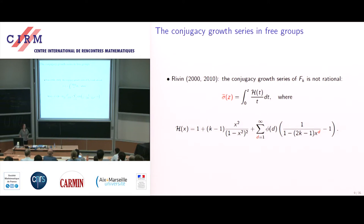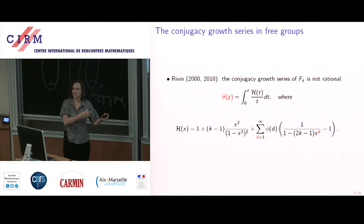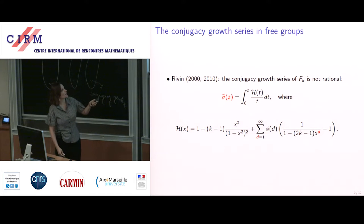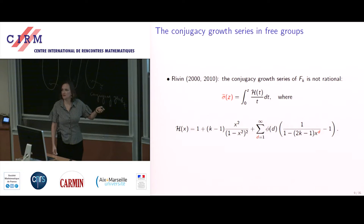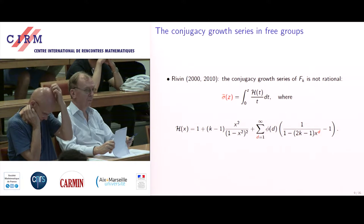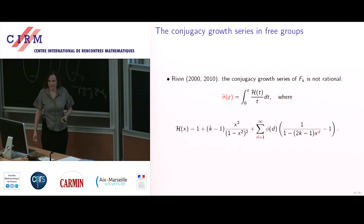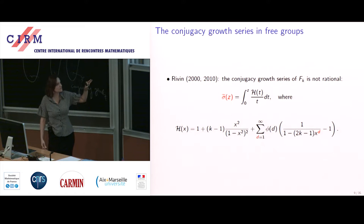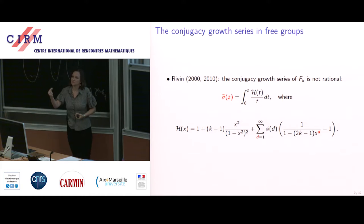Riven computed the conjugacy growth series for the free group: σ̃ is the integral of h(t)/t, where h(t) is a specific function. The series has infinitely many poles — visible from the formula — which makes it very far from being rational, and indeed quite difficult. This motivated looking at the problem more generally, and it turns out that in analytic combinatorics, the operation of picking one element from each cyclic permutation class of a language has been well studied.